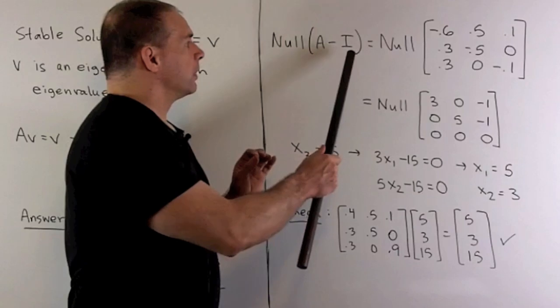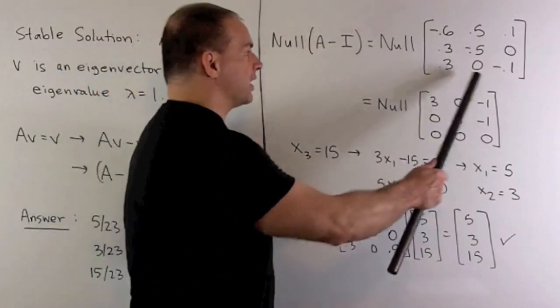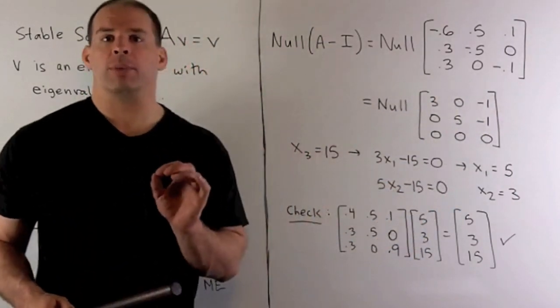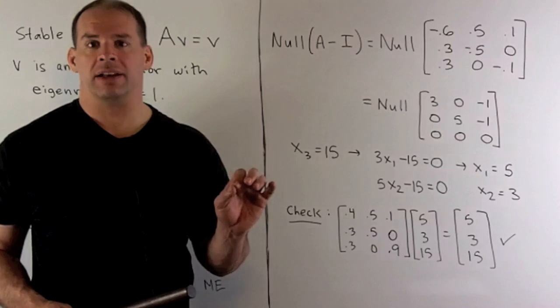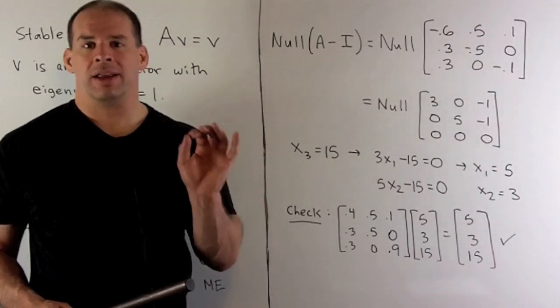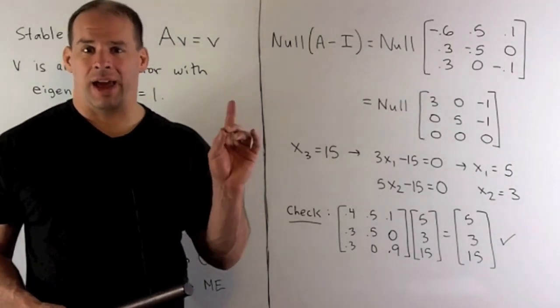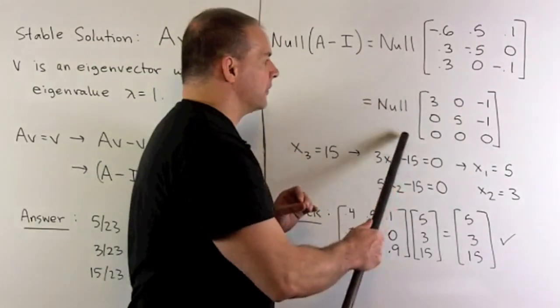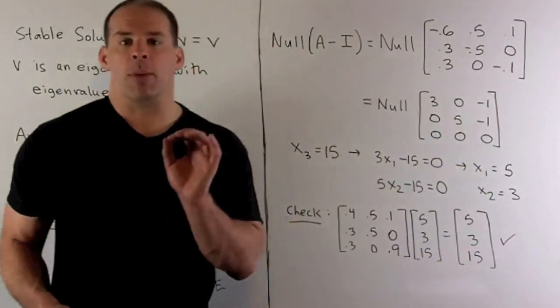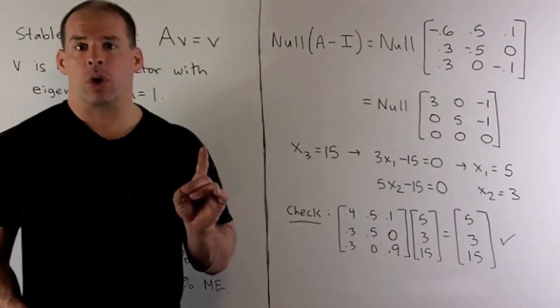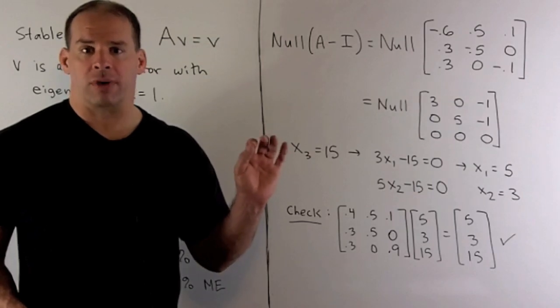To do that, we write down A minus I. Our first step, we can multiply through each row by 10, take out the decimals. Then we just row reduce. And when we do that, we'll wind up with this matrix here, which is almost in reduced row echelon form, but it's good enough to work with for us.